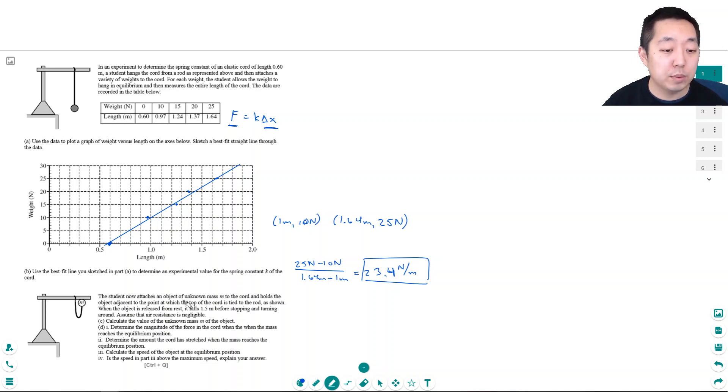The student now attaches an object of unknown mass m to the chord and holds the object adjacent to the point at which the top of the chord is tied to the rod. When the object is released from rest, it falls 1.5 meters before stopping and turning around. Assume the air resistance is negligible. Calculate the value of unknown mass of the object. So this is going to be a harmonic motion. What's going to happen is as this thing drops, it's going to hit 1.5 meters and bounce up and bounce up. It's going to go kind of up and down like this. Like a spring. A harmonic motion up and down.